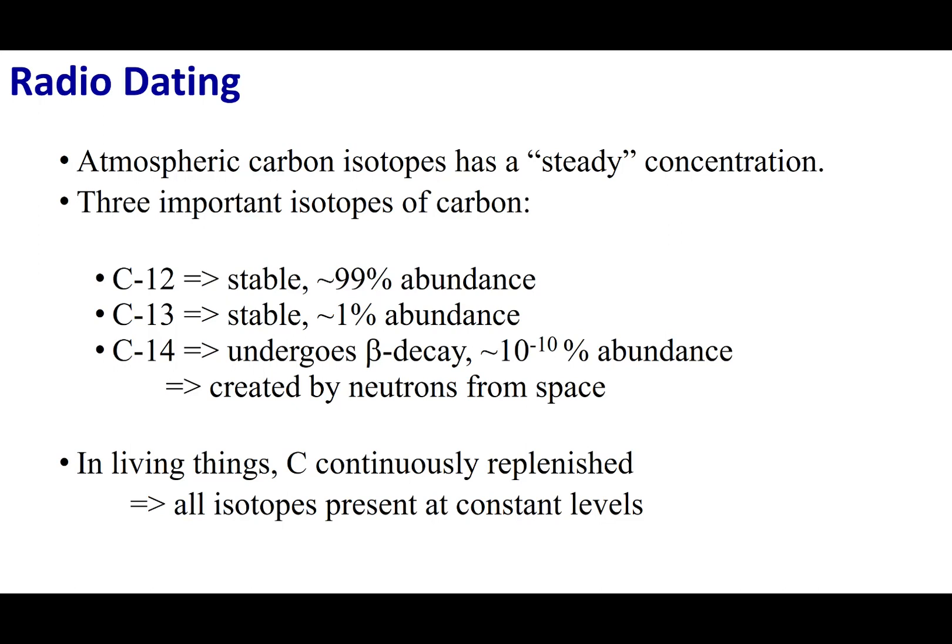So here's the story, and we're going to focus on carbon for this particular radio dating. If I were to look at carbon, carbon comes in many isotopes, 12, 13, and 14. 12 is by far the most abundant, 99%, and it is a stable nucleus. Carbon 13 makes up 1%, again, a stable nucleus. Now, the one we're interested in is carbon 14. Carbon 14 is a radioactive material. It goes under beta decay.